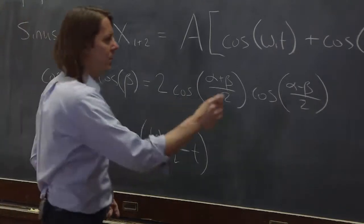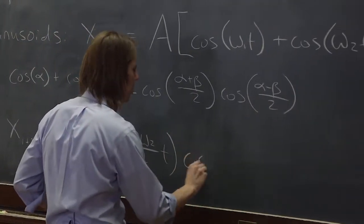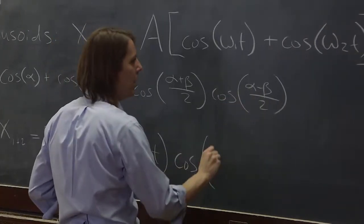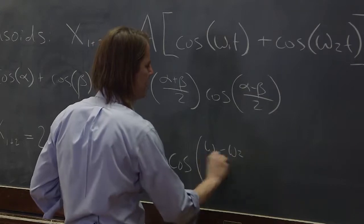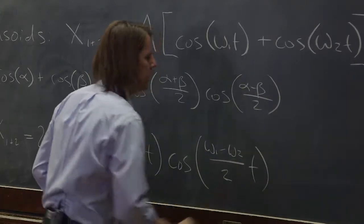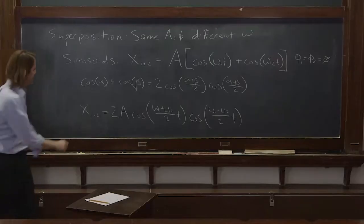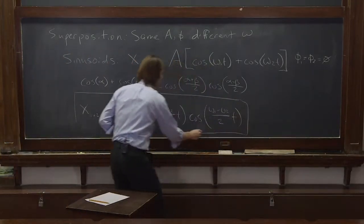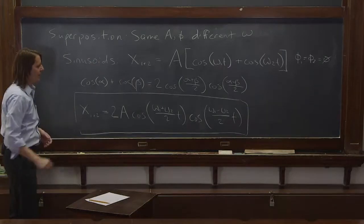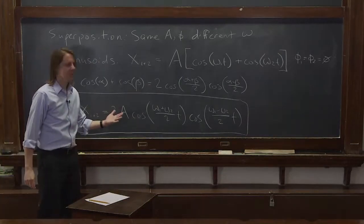Okay, and then the other one is cosine, and then it's just the minus term, omega 1 minus omega 2 over 2 times t. And this is your answer. This is another way you could write that superposition. And you could look at it and see if it starts to make any sense.